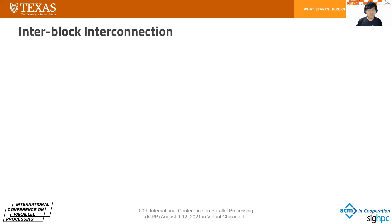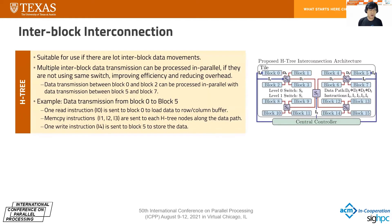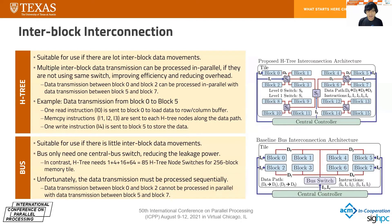To optimize interblock data communication inside the PIM, we considered how the interconnection between memory blocks is constructed. We propose a structure called H3, which is suitable when there is a lot of interblock data movement. With H3, multiple interblock data transmissions can be processed in parallel as long as they are not using the same switch, improving efficiency and reducing communication overhead. The baseline is the bus structure, which is suitable when there is little interblock data movement. The bus structure only needs one central bus switch, consuming significantly lower leakage power compared to H3, but data transmissions must be processed sequentially.